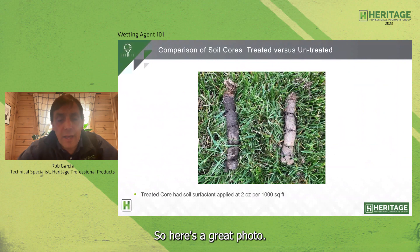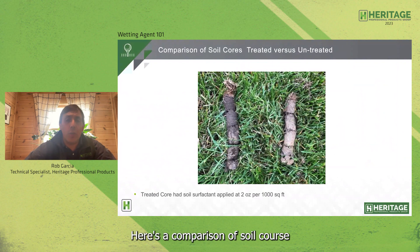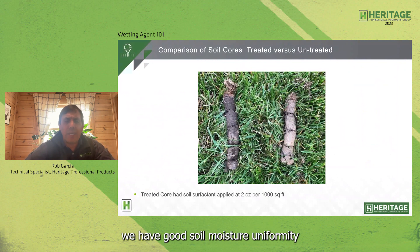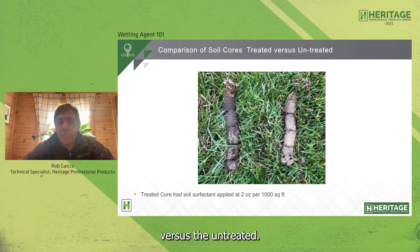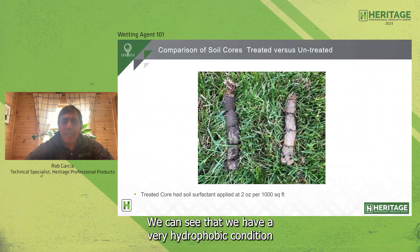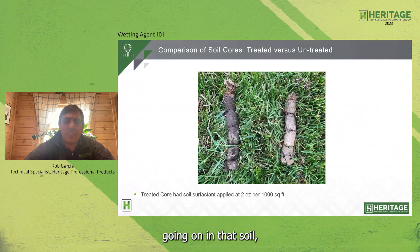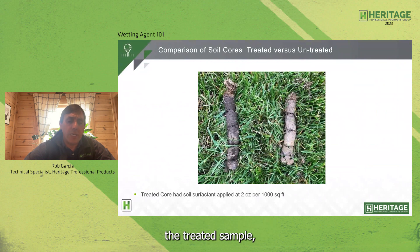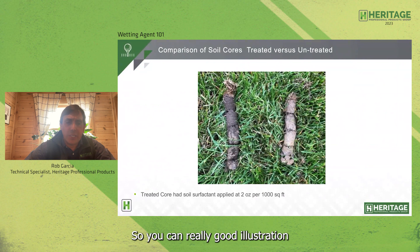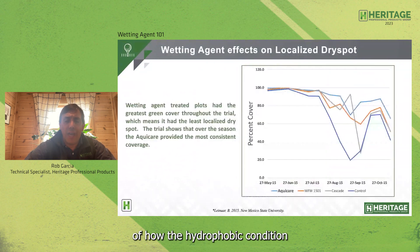Here's a comparison of soil cores from treated versus untreated areas. The treated area shows good soil moisture uniformity throughout the entire root zone of the plug, versus the untreated area, which shows a very hydrophobic condition. Even though both were watered the same, the treated sample shows much better soil moisture content — a great illustration of how the hydrophobic condition affects overall soil structure.